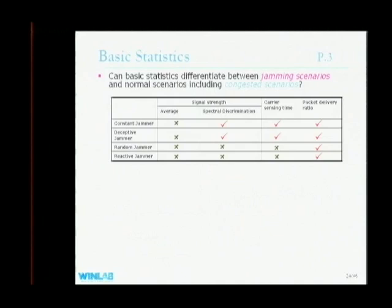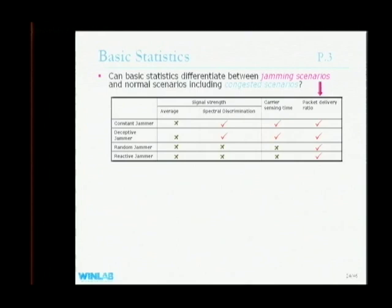We also look at other statistics: carrier sensing time at the sender side and packet delivery ratio at the receiver side. Packet delivery ratio seems like an ideal statistic — it can differentiate jammed from normal scenarios, even including congestion. In a jammed scenario, packet delivery ratio drops to near zero, whereas in a congested scenario, the MAC protocol still coordinates senders so packet delivery ratio stays around 70%. However, packet delivery ratio alone doesn't tell you why it's low — whether due to jamming, the sender moving away, or hardware failure.